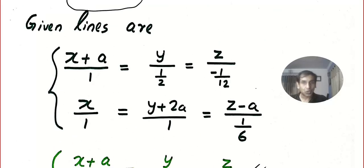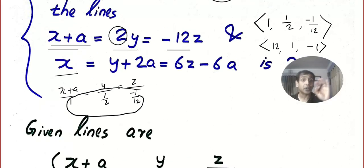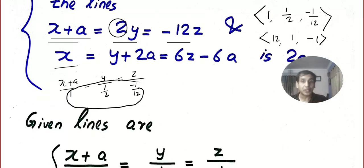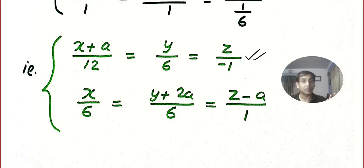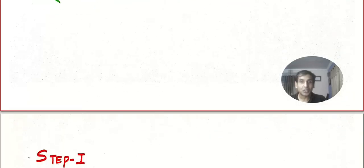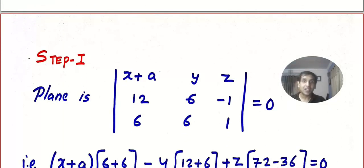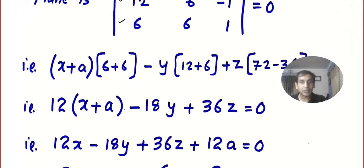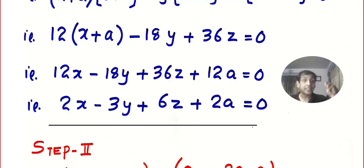So what I did was: the equations were not in standard form, so I slowly converted them into standard form, and after that the equation is easy to write. Did you read the question? They asked only the distance, not the equation. So Step 1 is: form the plane using the numerator and denominators, expand the determinant to get the plane equation. Comment below if you are getting the same answers.